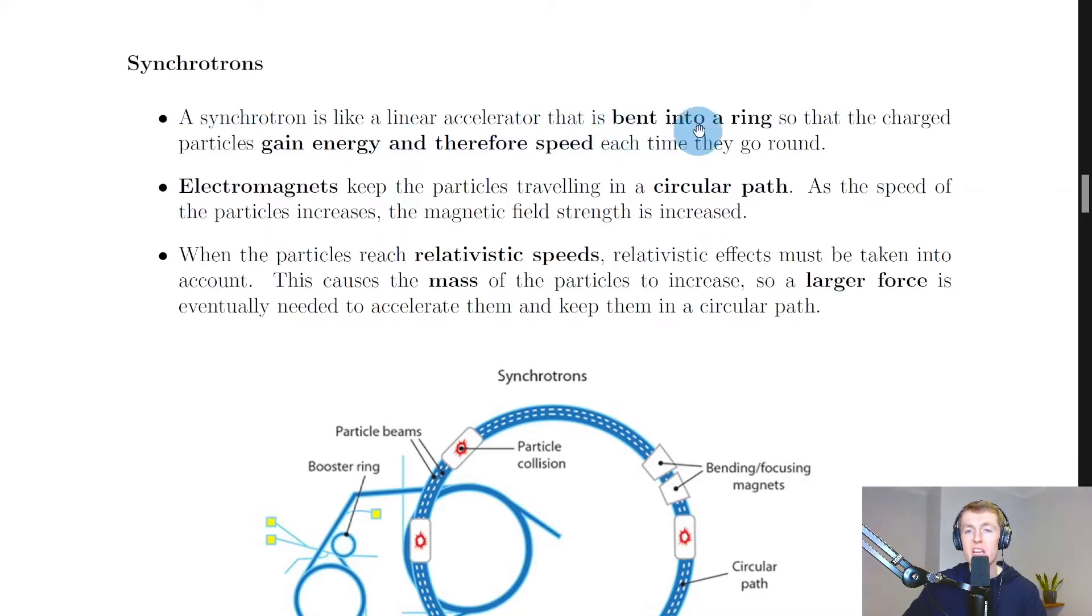So the charged particles gain energy and therefore speed each time they go round. Think back to what you learned in the theory video for linear accelerators and imagine taking that and bending it into a ring. Then it says that electromagnets keep the particles traveling in a circular path.